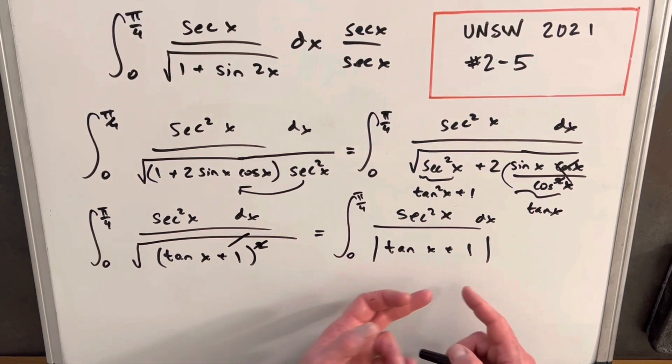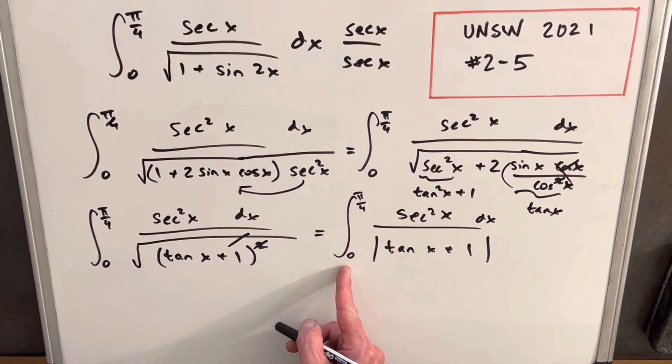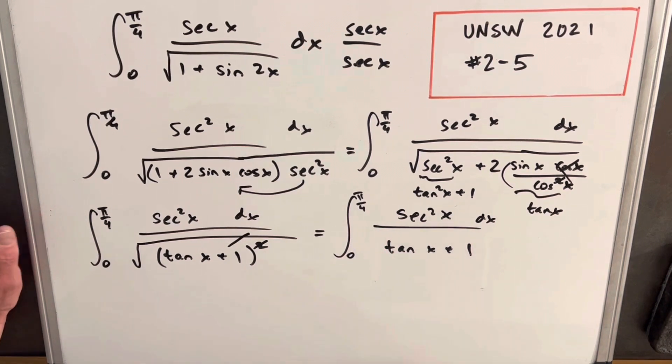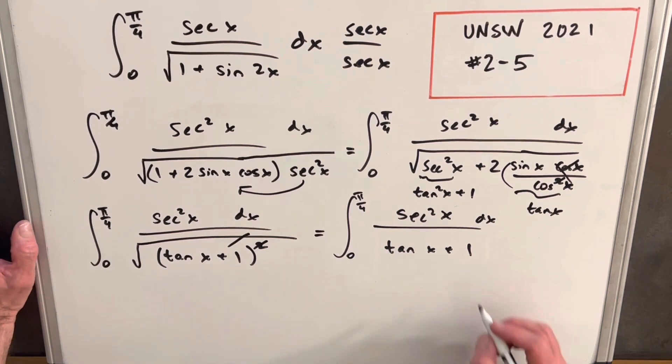So this absolute value could bother us, but we notice that our bounds are all in quadrant one. And in quadrant one, tan is always positive, or positive or zero, because sine is positive or zero and cosine is positive or zero. So because this is always going to be positive, we can just remove our absolute value signs there.